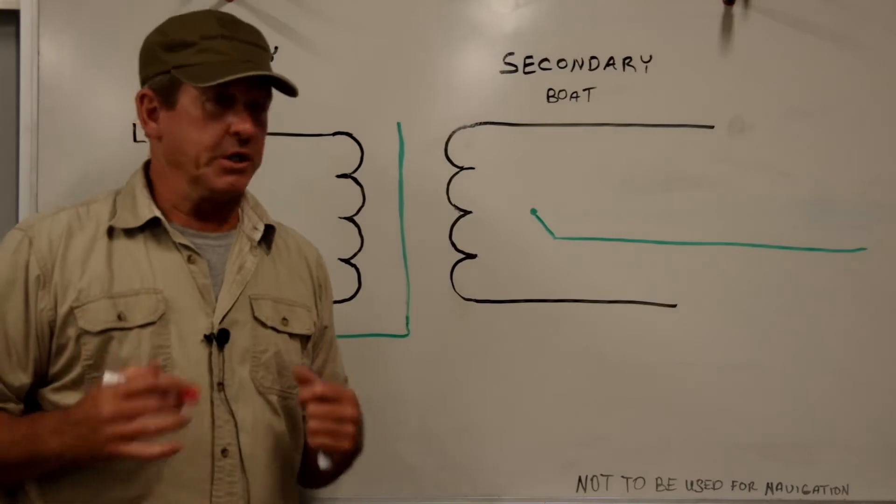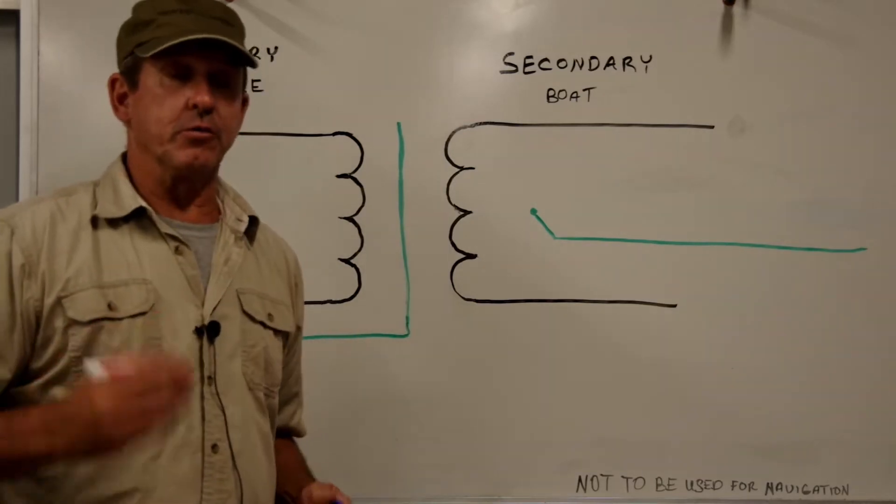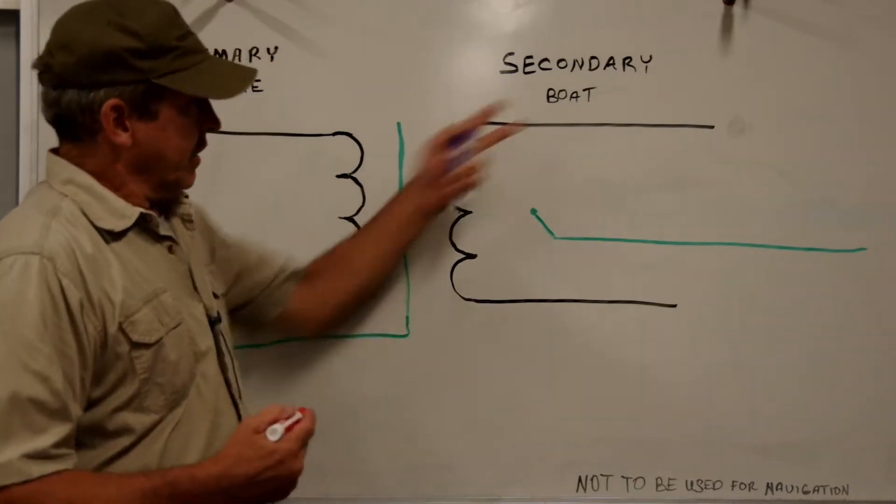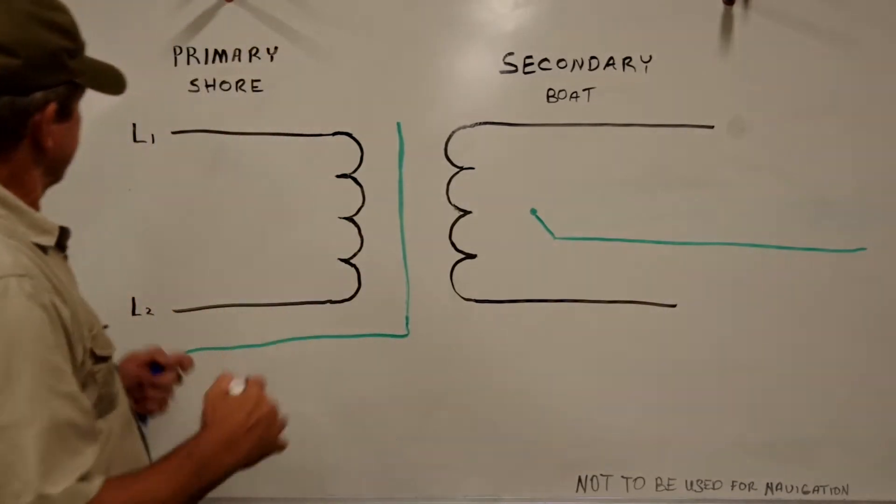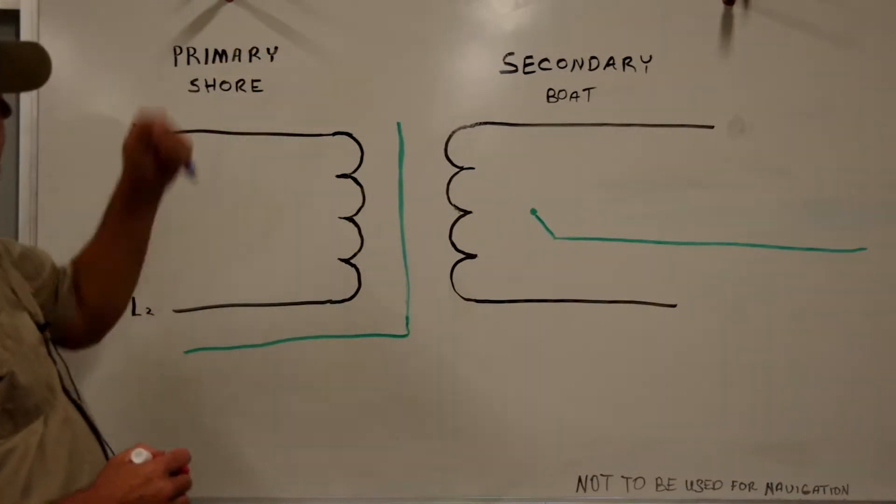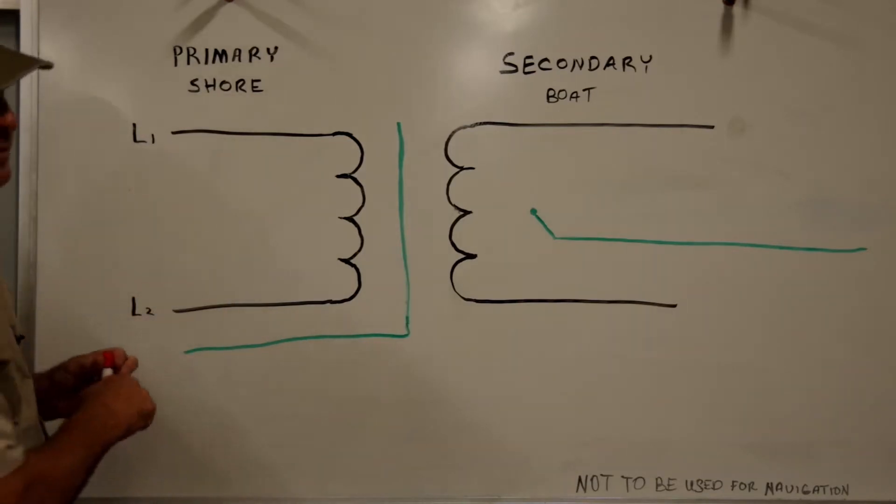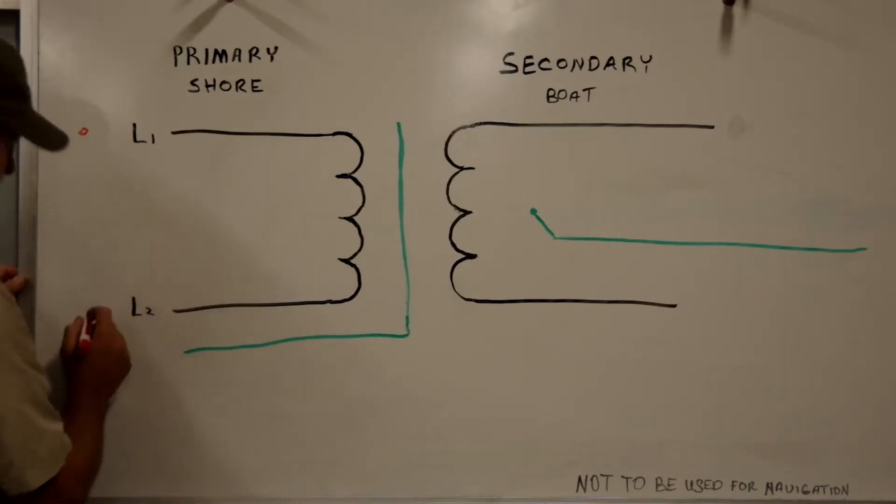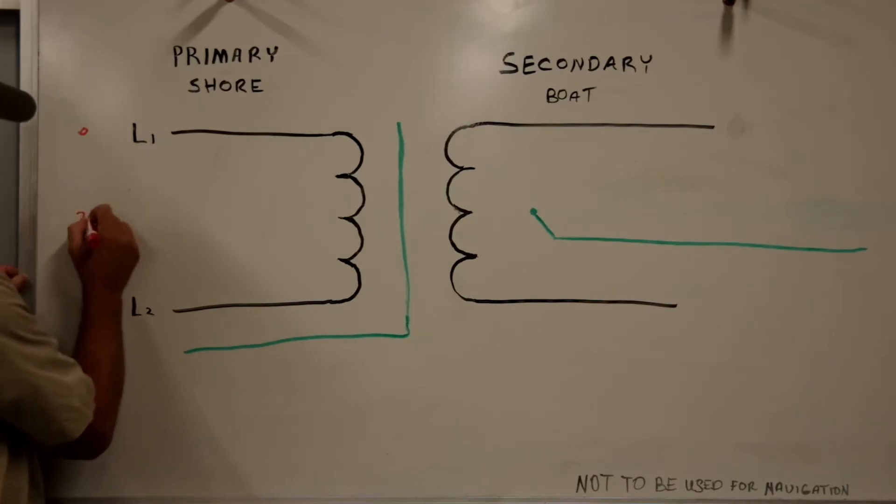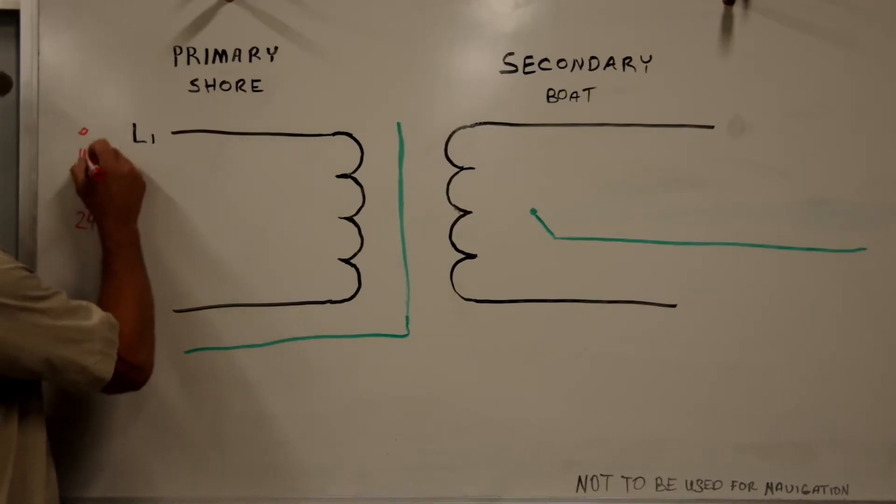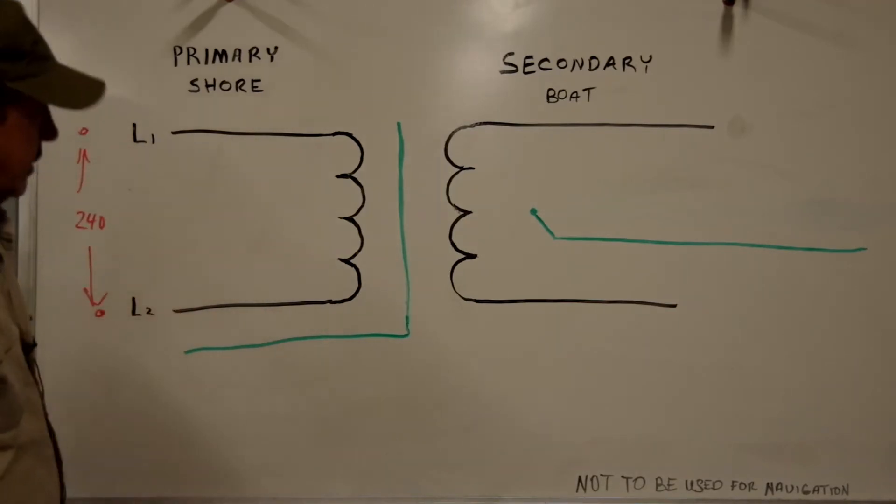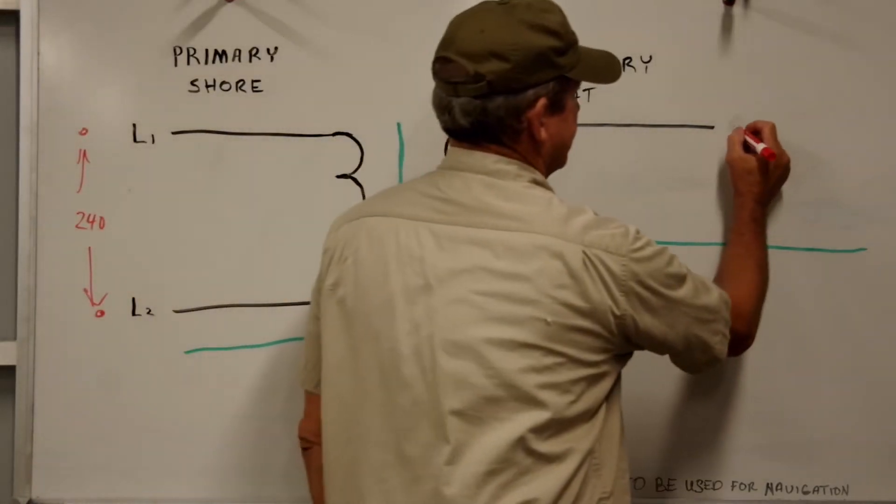Okay, so one of the really neat things we can do with the transformer is we can use the transformer to vary the voltages on our output side. So this is pretty neat. Say, for example, on the primary side, which is our 50 amp 240 volt shore cord, between this point and this point we will measure 240 volts.